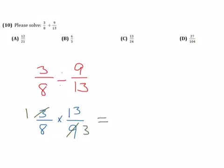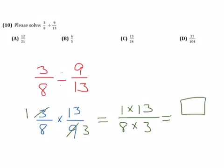Then we multiply straight across. So 1 times 13, all over 8 times 3. That gives us something over something, and that will be our answer. Thank you.